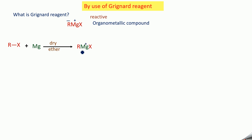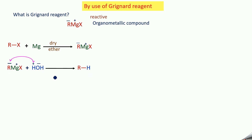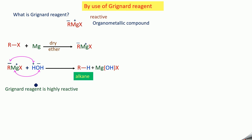Magnesium being a metal gets a positive sign, and R gets a negative sign. This Grignard reagent is used for preparing an alkane: R-MgX treated with water gives R-H (an alkane). This R (negative) is attracted to H⁺ to form R-H, and Mg combines with OH⁻ to give Mg(OH)X. The Grignard reagent is decomposed easily by water.